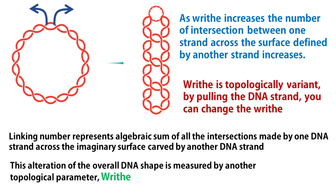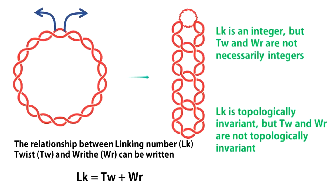Writhe can be of any sign, and usually its absolute value is much smaller than that of twist. Just as twist, writhe is not necessarily an integer. And since writhe and twist compensate each other to keep linking number invariant, writhe is topologically variant just as twist. Remember that linking number is equal to the sum of twist and writhe for any closed circular DNA — the sum of two topologically variant parameters is a topologically invariant parameter.